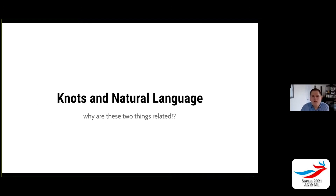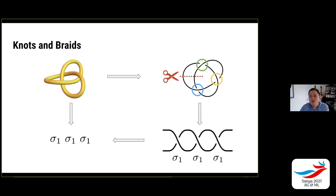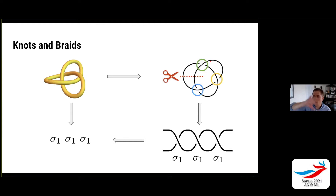Knots and natural language — why are these two things related? Here's the trefoil. What you can do is cut it; given any cut of the knot, you can imagine this as the start of a braid. As you follow these strands across the knot diagram and come back to the starting point, what you have is a braid. The braid you get when you cut this knot this way is a braid where the cut line is here and this endpoint is identified with this endpoint.